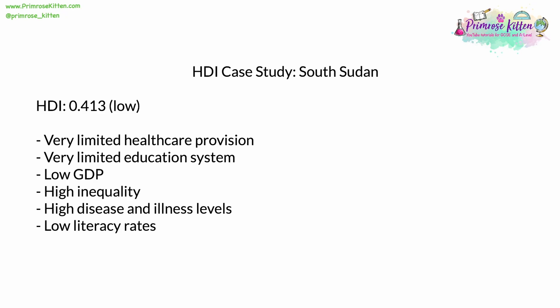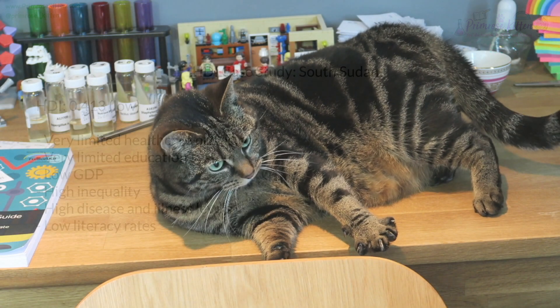As with high HDI countries, it's useful to have a few case studies rather than just the one. I would suggest also looking at places like Chad and Niger. One notable factor is that most of the countries with very low Human Development Indexes are in Africa, whereas most of the ones with very high Human Development Indexes are in Western Europe.